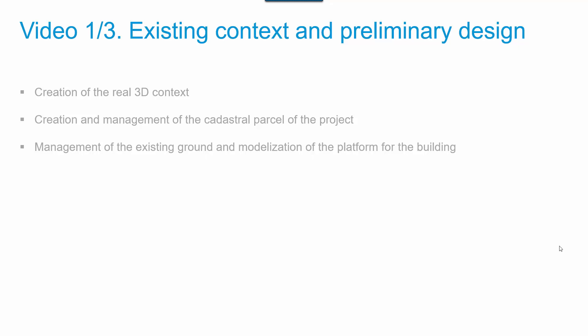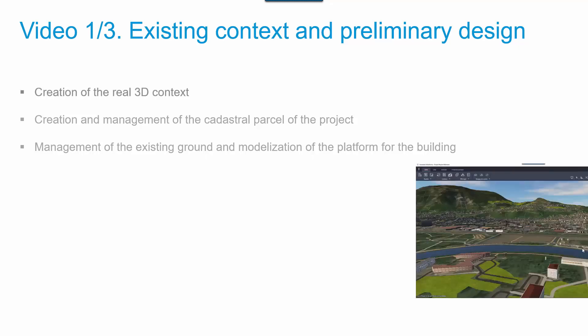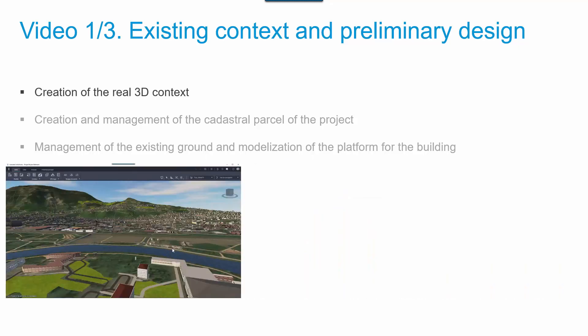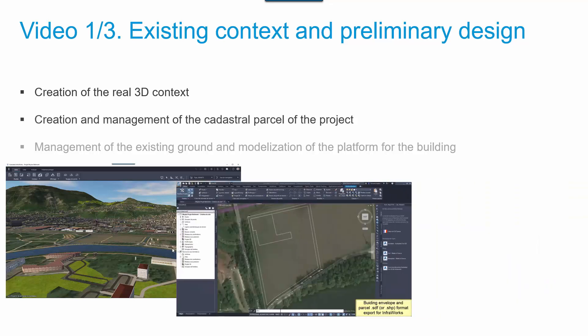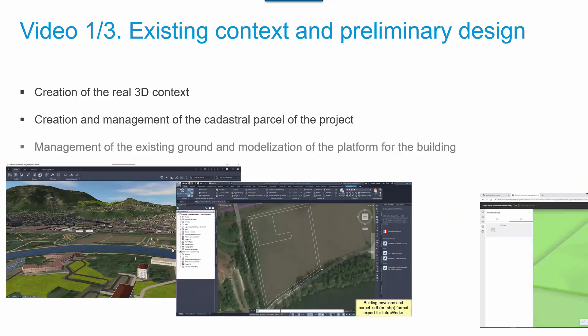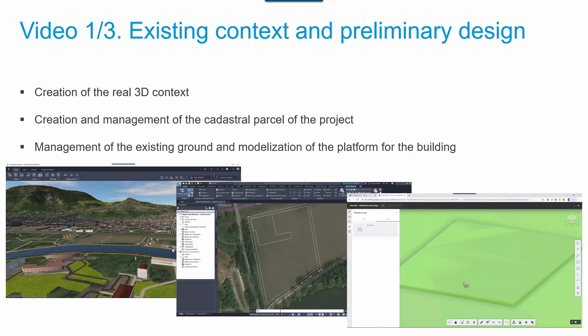There are 3 videos in this tutorial. Video number 1 is about existing context and preliminary design. You will see how to create the real 3D context, how to create and manage a cadastral parcel for the project, and how to manage the existing ground and how to model the platform for the building.